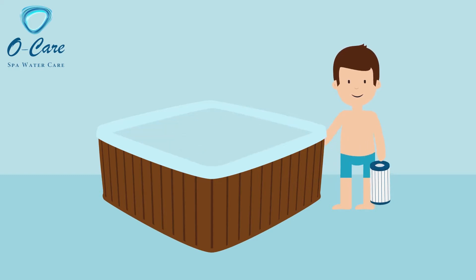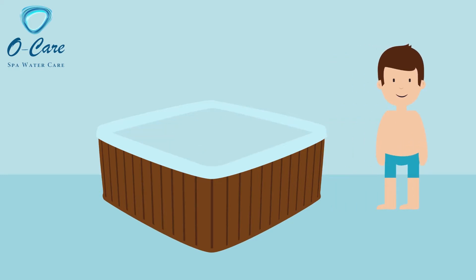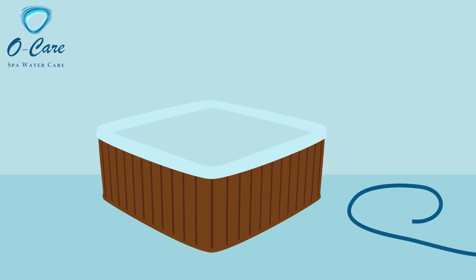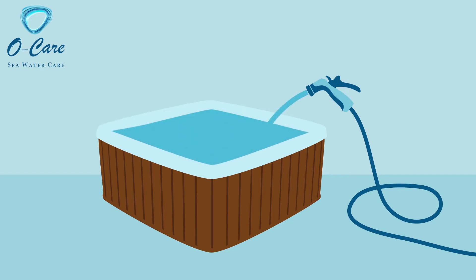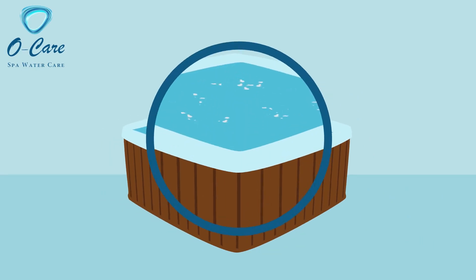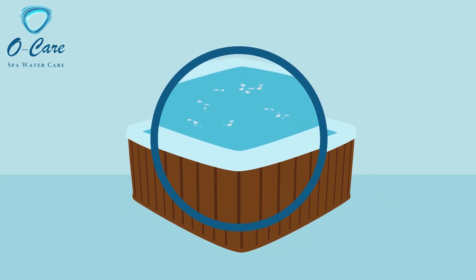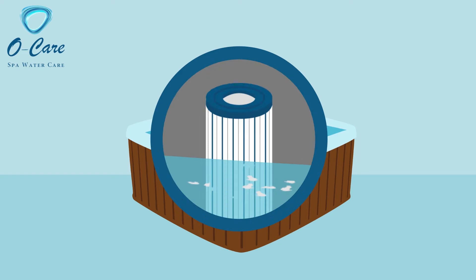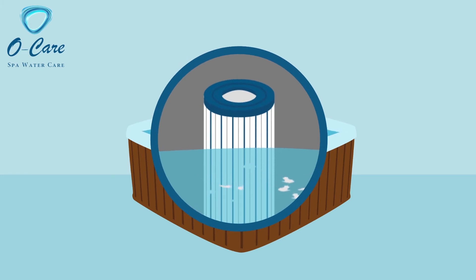After this, drain your hot tub, put the filters back, and fill it up again. If you still notice too many flakes, then repeat the process, or wait until the filters pick up the leftover residue.